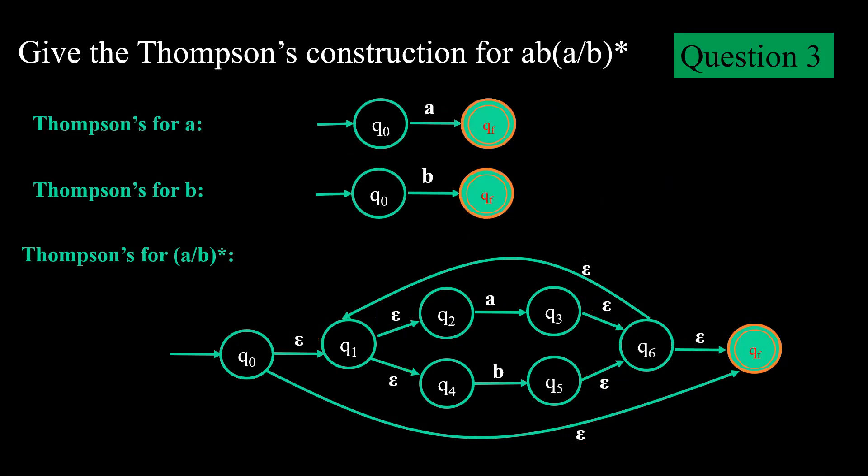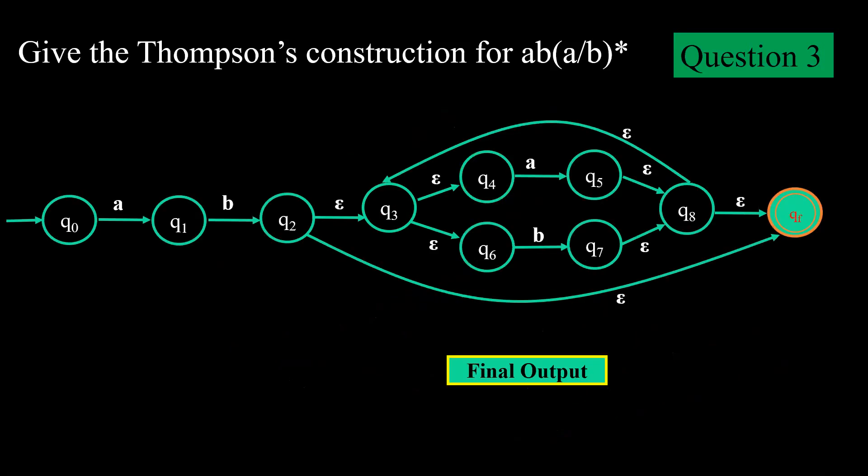Now just I need to go in for concatenation. a, b, (a|b)*. So this is the final output which I get. 8 epsilon and a and b in concatenation. a, b in concatenation with a or b and this a or b in star.